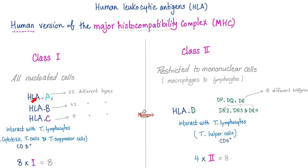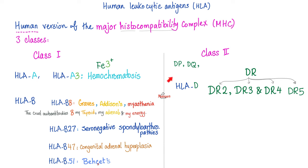There is more. HLA-A is not just one protein — it's 22 different types. How about DR? 18. These are clinically relevant. HLA-A3 is associated with hemochromatosis. HLA-B8 is associated with Graves' disease, Addison's disease, and myasthenia gravis — autoantibodies destroying the thyroid, adrenals, and causing muscle weakness.